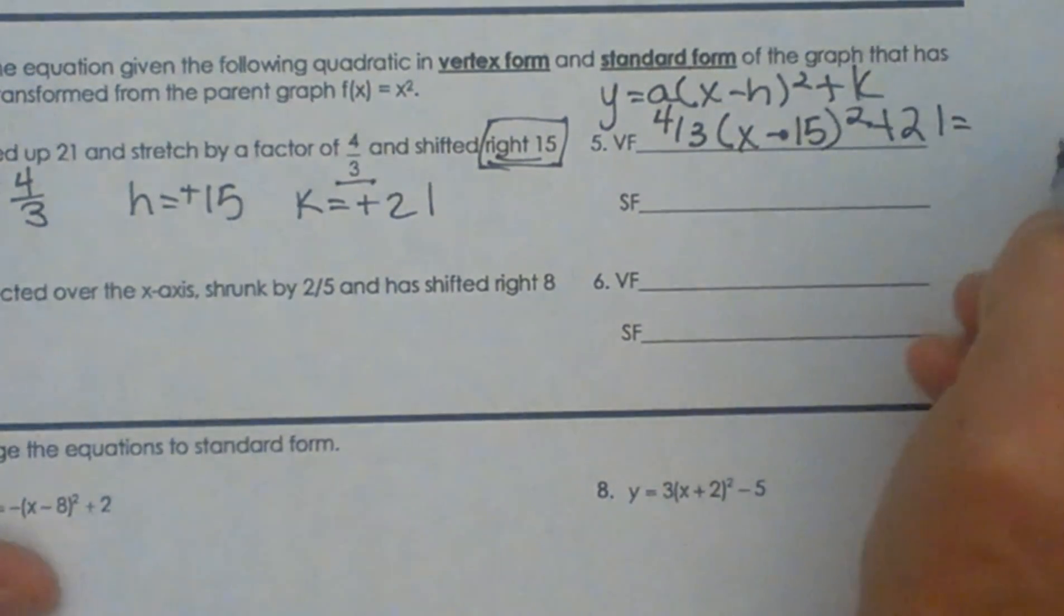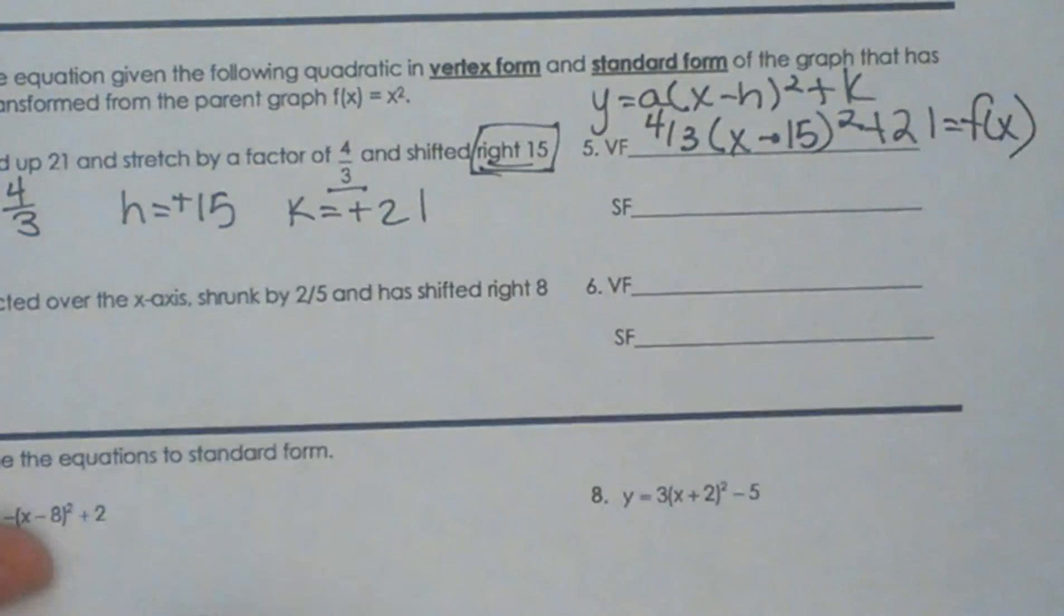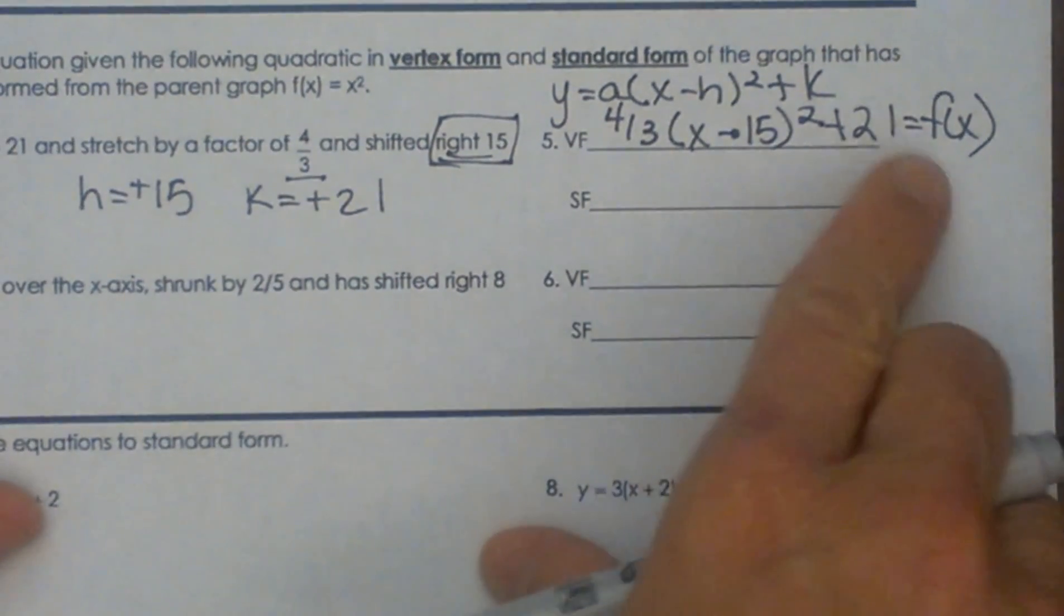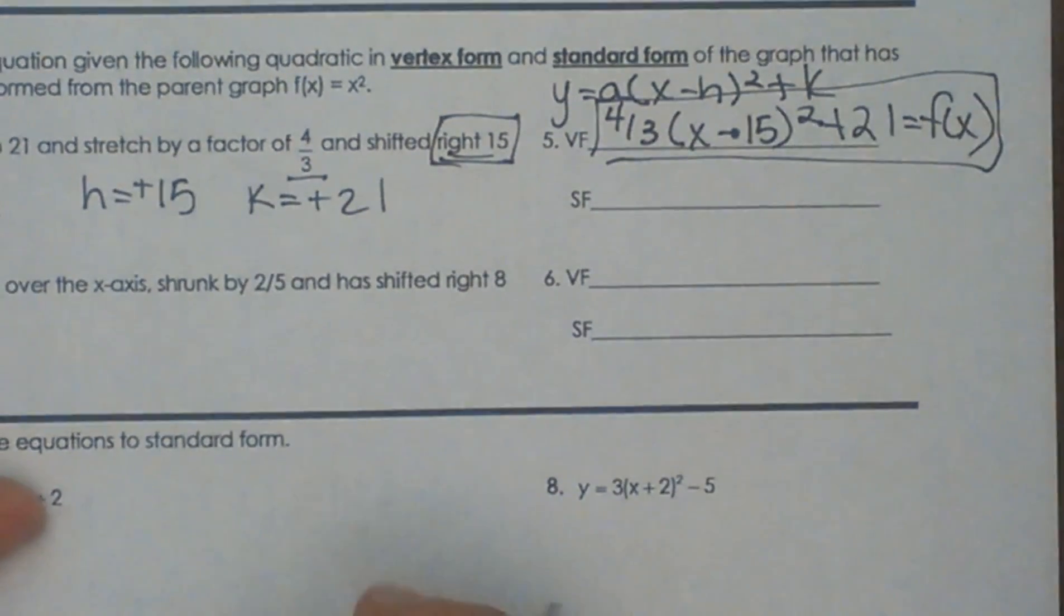And this is an equation, so I always have to put equals y or in this case I'm going to call it f of x. So always make it into an equation. And that is our equation of vertex form.